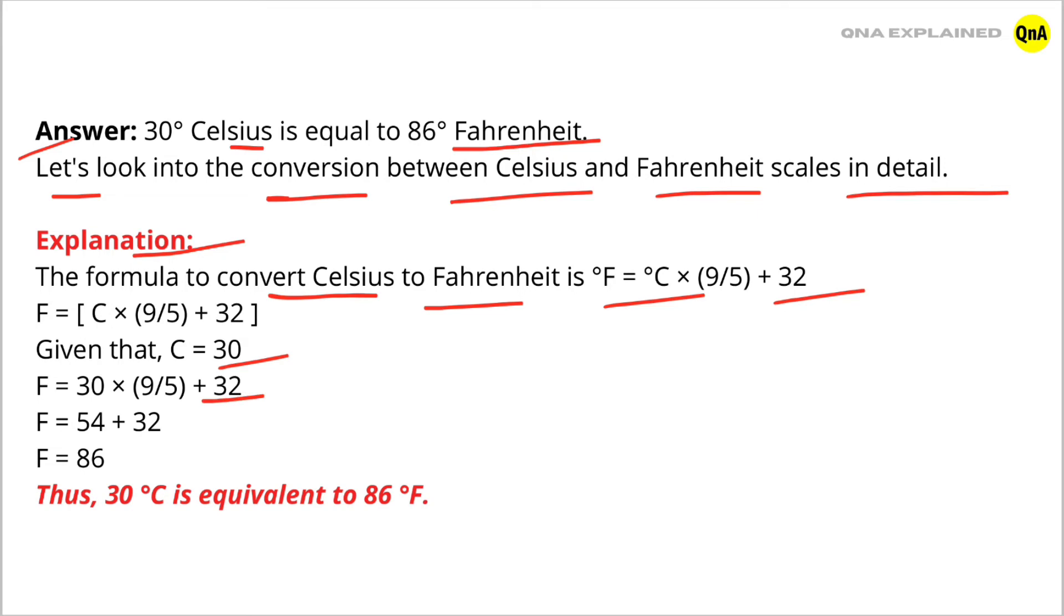So F = 86. Thus, 30 degrees Celsius is equivalent to 86 degrees Fahrenheit.